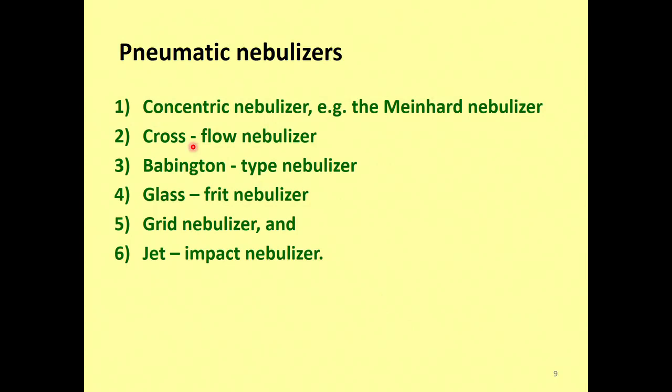Pneumatic nebulizers include about five types: the concentric nebulizer (known as the Meinhard nebulizer), the cross-flow nebulizer, the Babington-type nebulizer, the glass frit nebulizer, and the grid or jet-impact nebulizer. These are different kinds of equipment to produce the sample in nebulized form. We will discuss the different kinds of nebulizers in the next class.